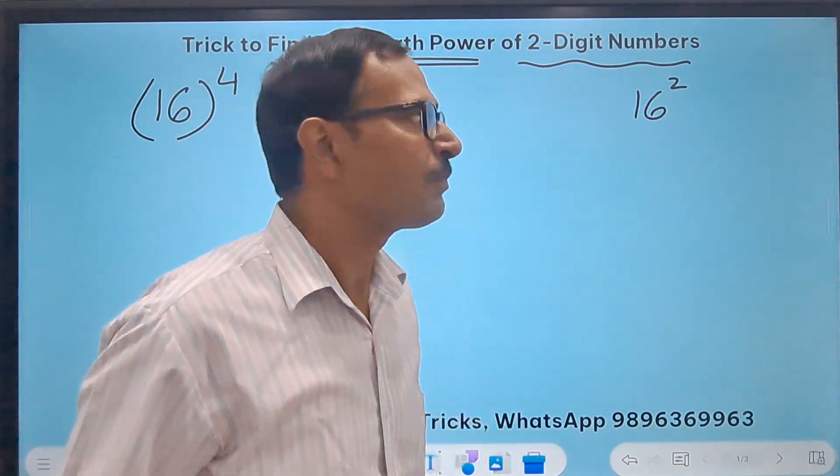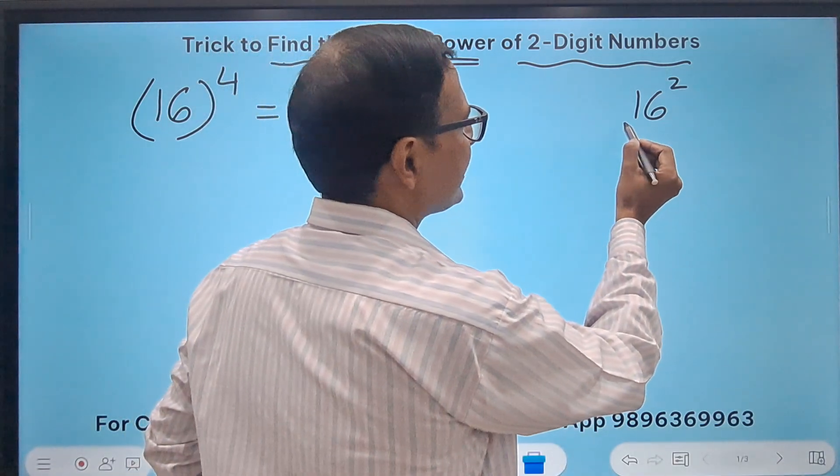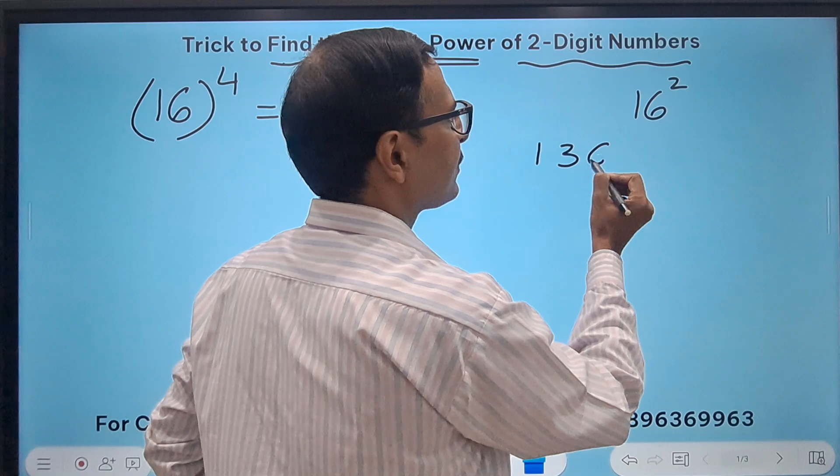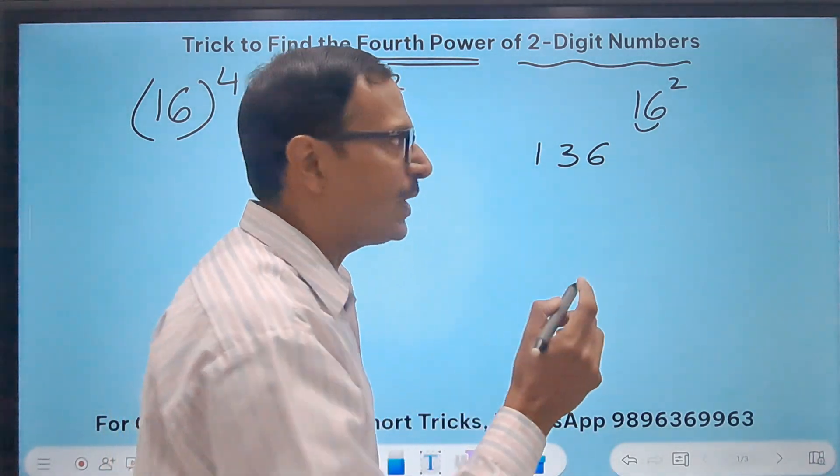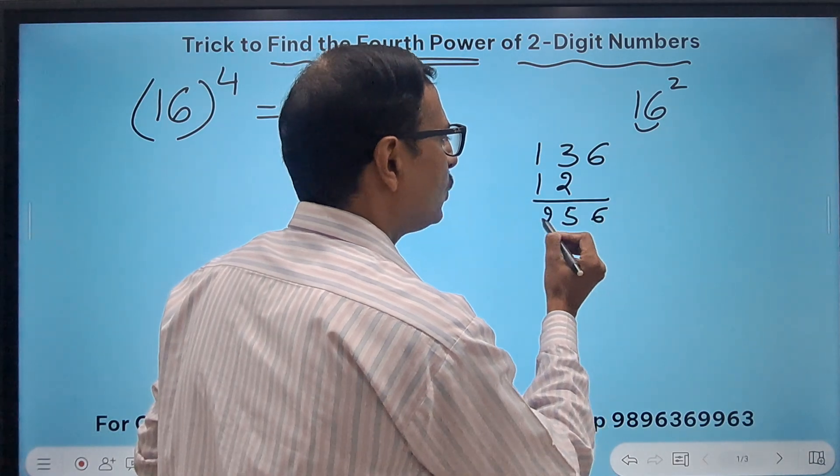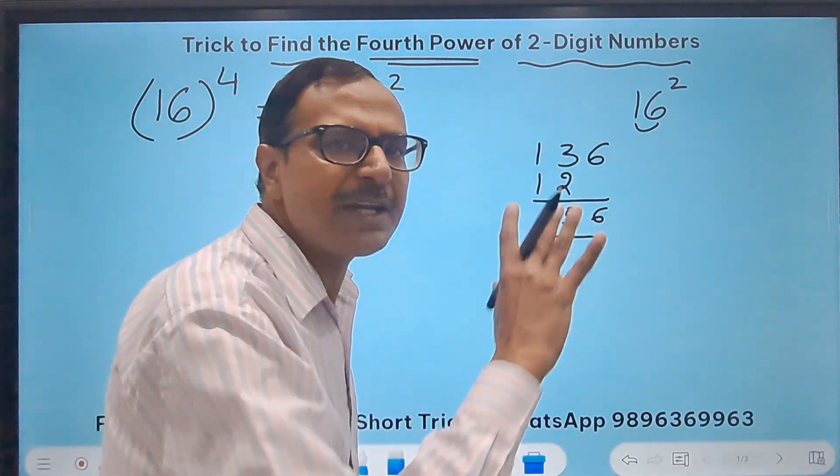But even if you don't know it, there are so many different methods through which you can get to the square of two-digit numbers. I'll tell you two methods. So 1 square is 1, 6 square is 36, 1 into 6 is 6, the double is 12, so I'll write 12 here and just add vertically. You get 256 as the square.